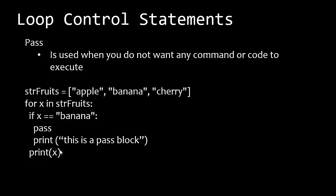Pass is used when you do not want any command or code to execute — it's kind of an odd little thing. In this case, for x in fruits, if x equals banana, pass — don't do anything. However, the next statement is print x, so it's literally going to still print. The pass is an opportunity to say I don't want to do anything, but in this particular example we're overriding that by putting a print after it. I don't think you're going to use this hardly at all, but I want you to be aware of it, and it's in your resources if you want more information.